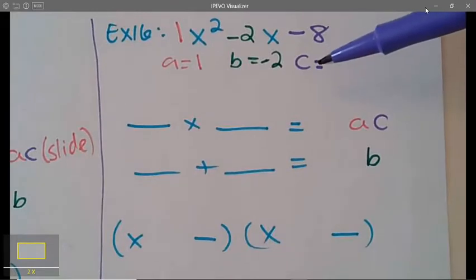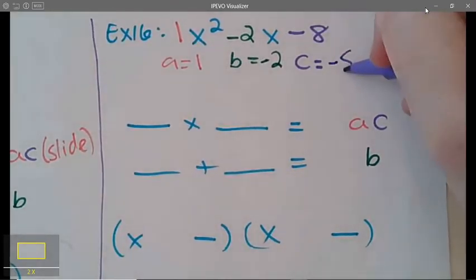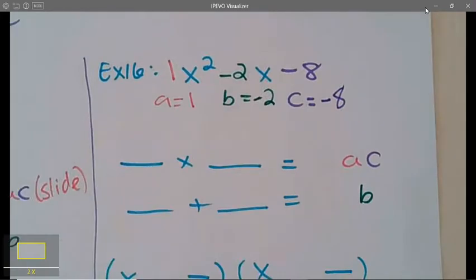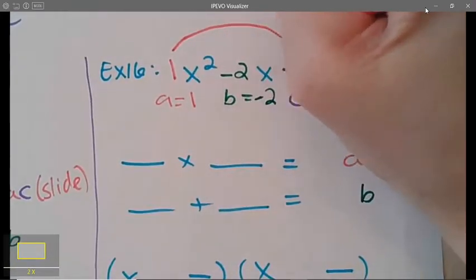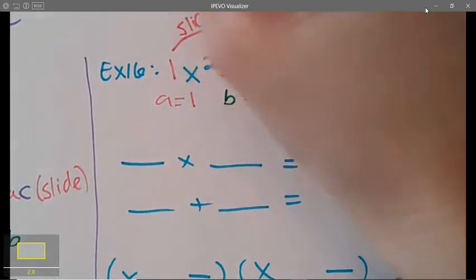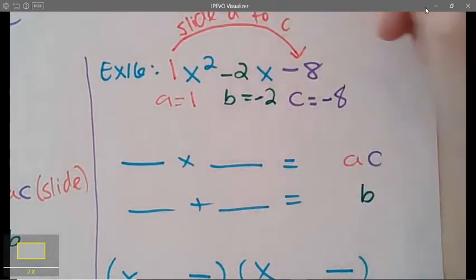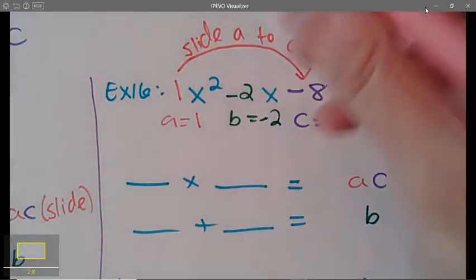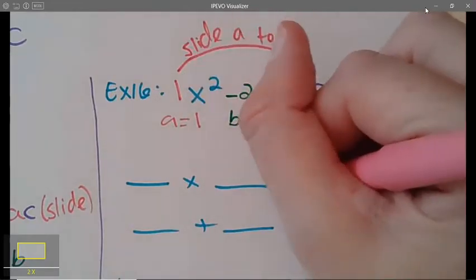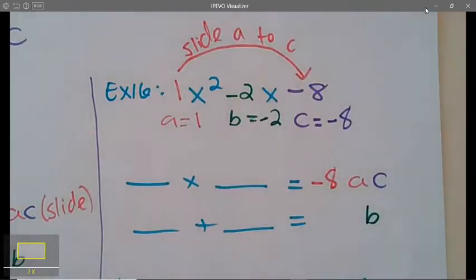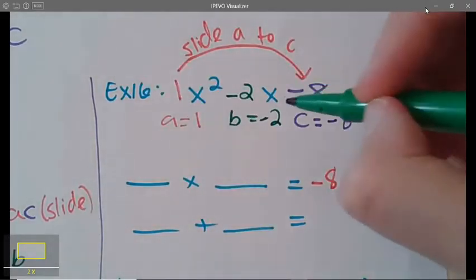Okay, let's start sliding and dividing. So I'm going to slide a to c, which means we're going to multiply a to c. So a times c, 1 times negative 8 is negative 8. And then I need to identify my b which is negative 2.